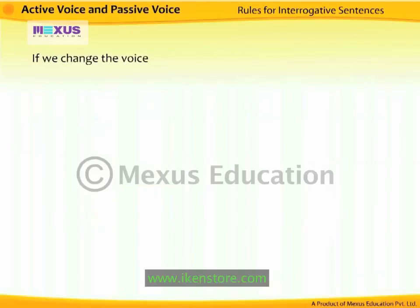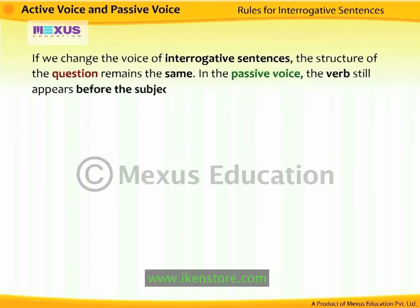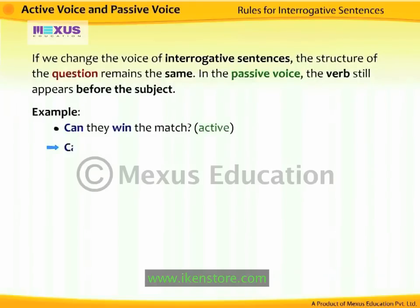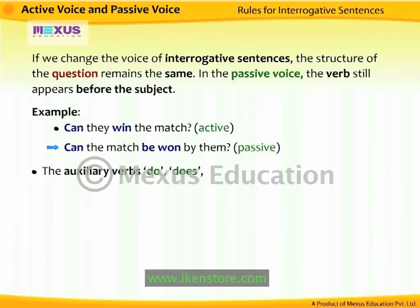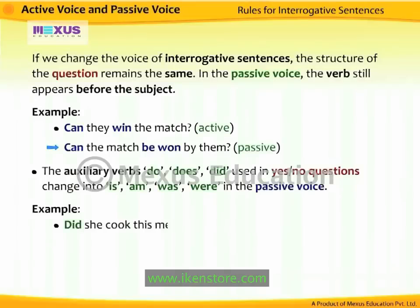When changing the voice of interrogative sentences, the structure of the question remains the same in passive voice — the verb still appears before the subject. For example, 'Can they win the match?' becomes 'Can the match be won by them?' The auxiliary verbs do, does, did used in yes/no questions change into is, am, was, were in passive voice. For example, 'Did she cook this meal?' becomes 'Was this meal cooked by her?'